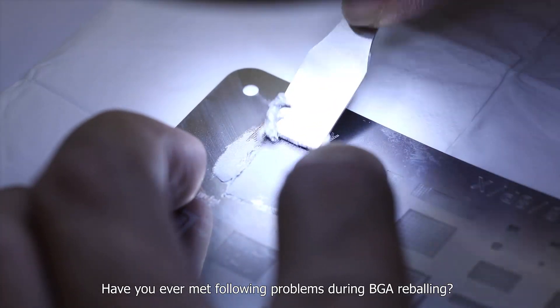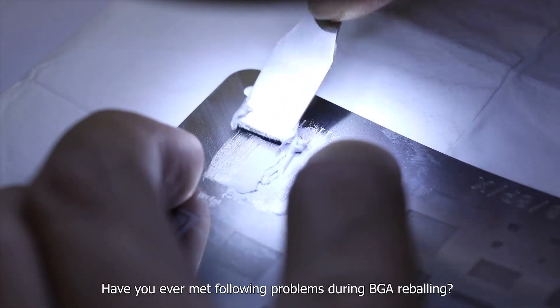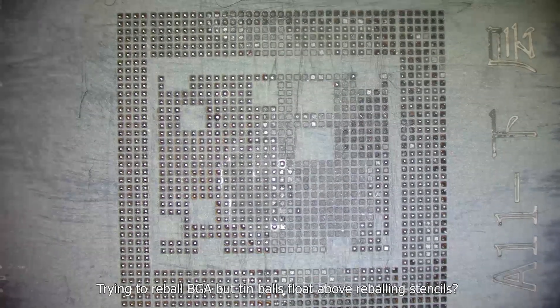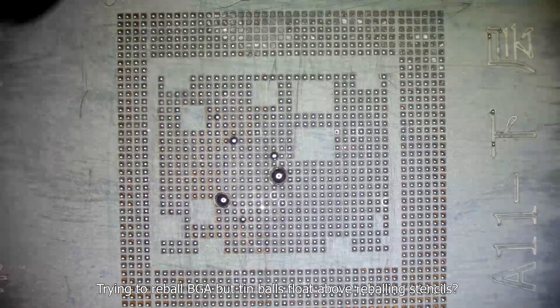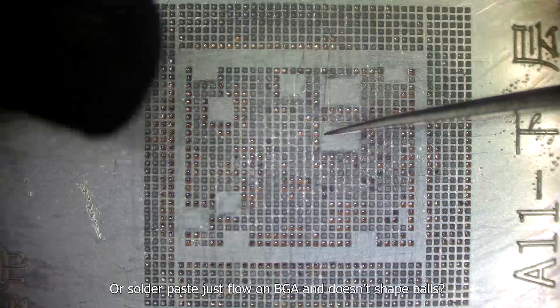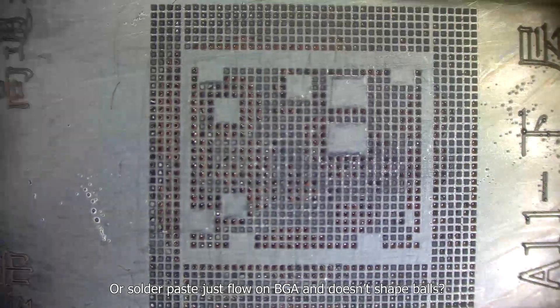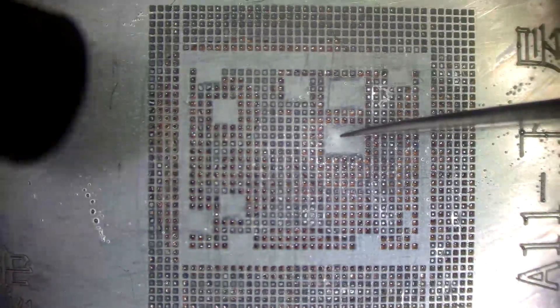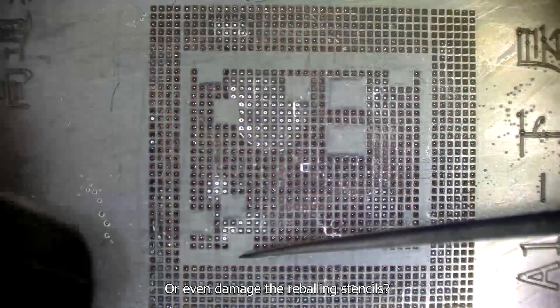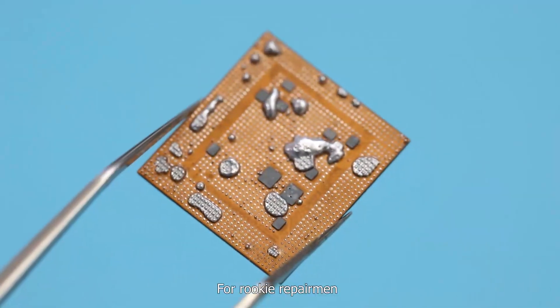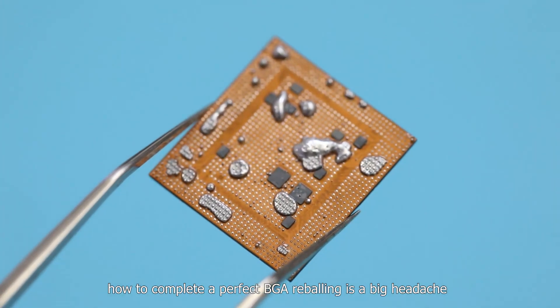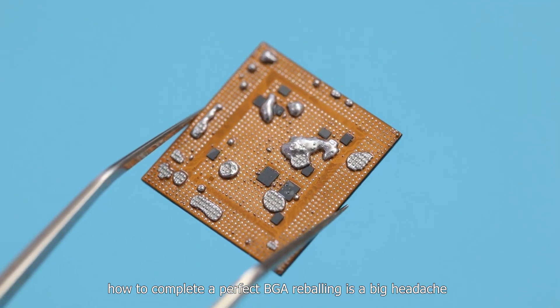Have you ever met following problems during BGA reballing? Trying to rebuild BGA but tin balls float above reballing stencils, or solder paste just floats on BGA and doesn't shape balls, or even damages reballing stencils. For rookie repairmen, how to complete a perfect BGA reballing is a big headache.